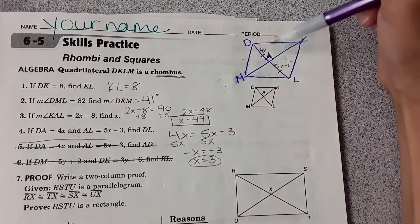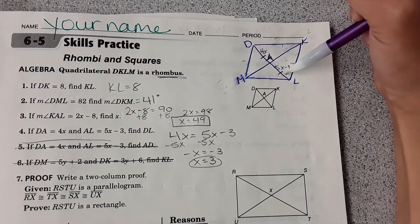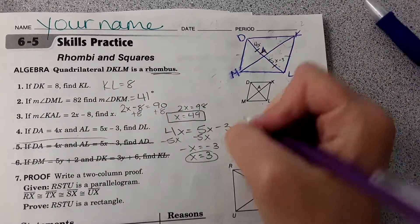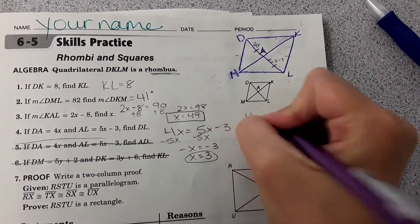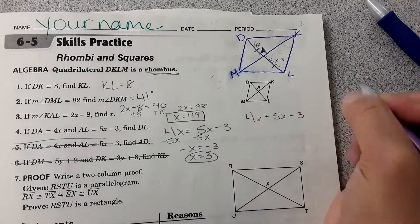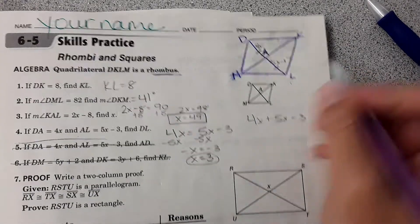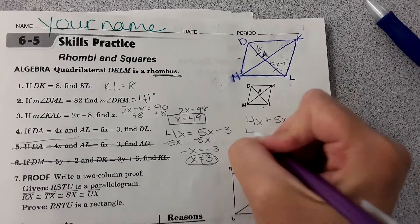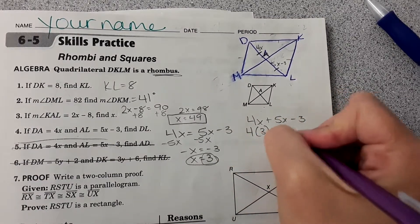It asks us for the length of DL, which is that entire length. So what I'm going to do is say 4x plus 5x minus 3, and then plug in the 3 for x and solve for that entire length.